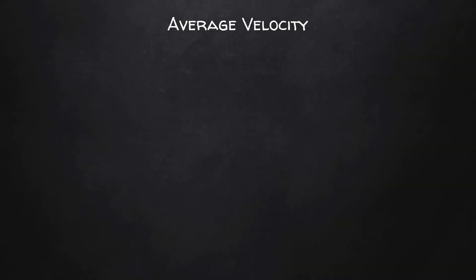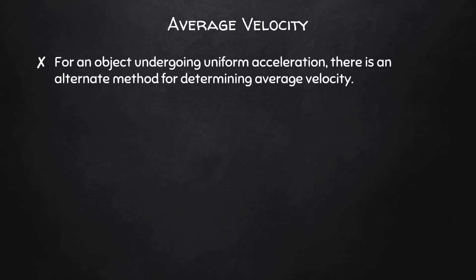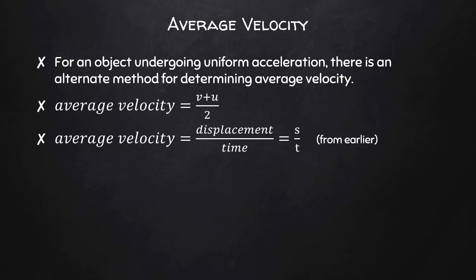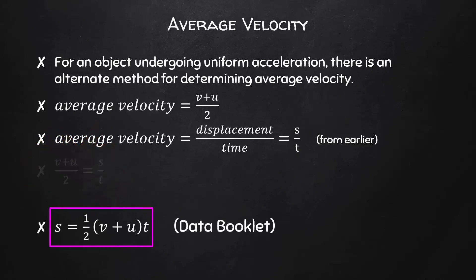Now that we've introduced acceleration, let's talk about average velocity again. If an object is undergoing uniform acceleration, we can say its average velocity is the average of its final and initial velocities. In the previous example, the car accelerated from rest to 40 meters per second, so its average velocity is 20 meters per second. Since both methods are equal to average velocity, we can set them equal to each other, and using algebra we get S equals one-half times (V plus U) times T. You can find this equation in your data booklet too.